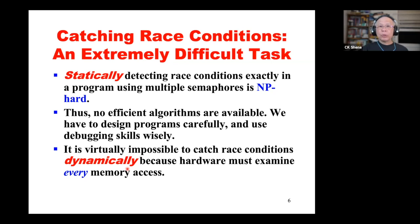Detecting race conditions is an extremely difficult task. The only solution so far, under the Turing machine model, is not to put race conditions into your program. Unfortunately, if you find that your program produces non-deterministic results, you'll have to use some debugging skill to find the problem. This is the main purpose of this component.